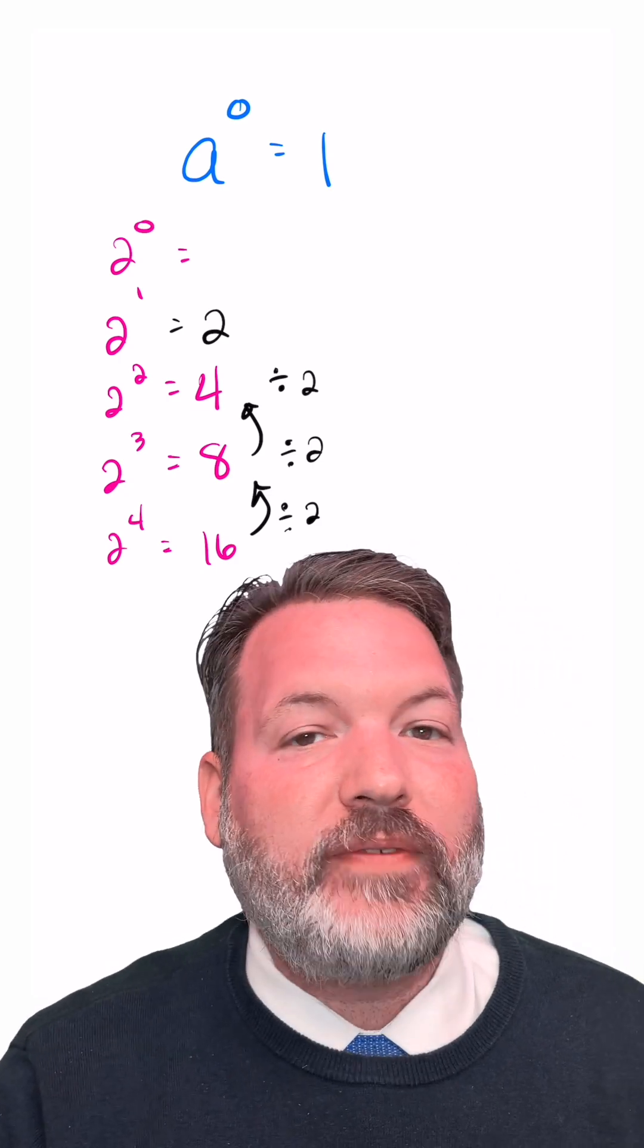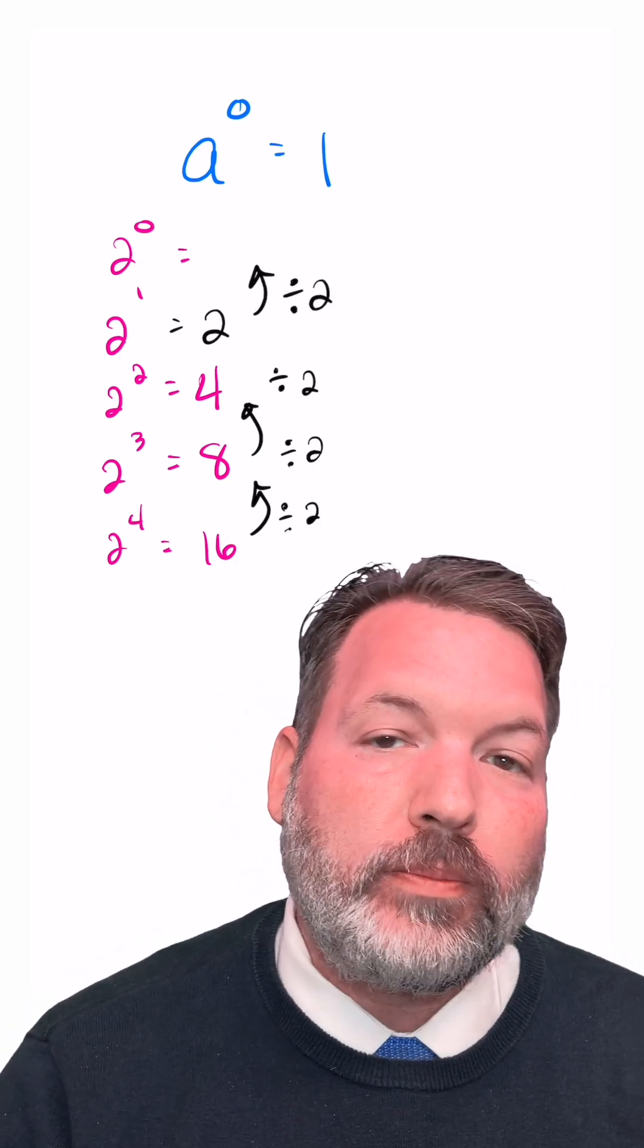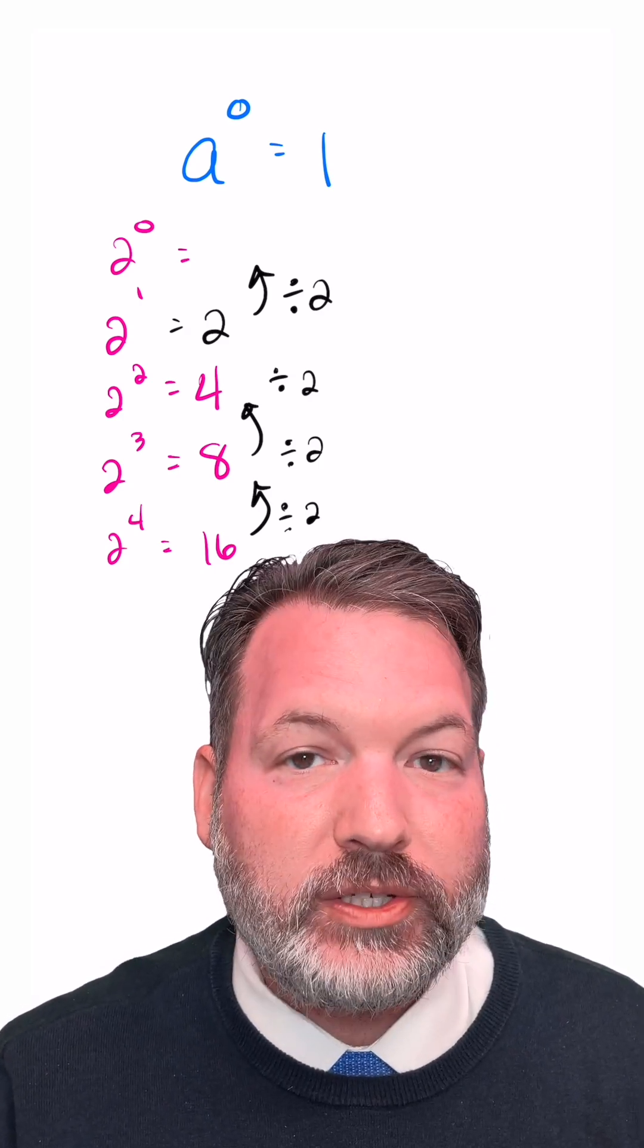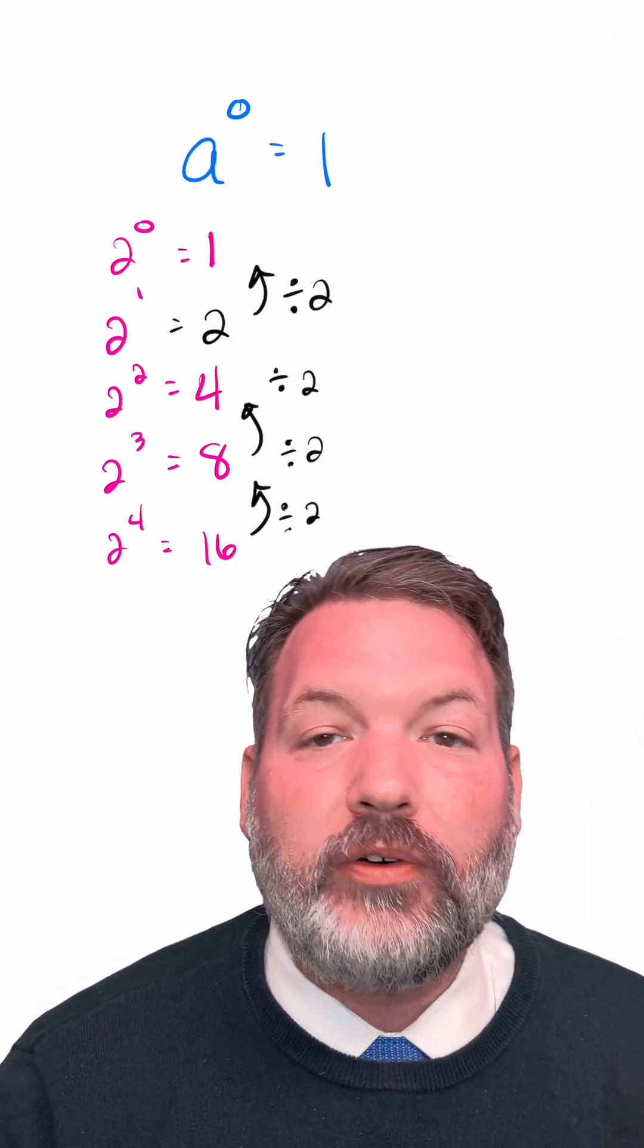But there's no special reason we have to stop at just the first power of 2. If we do this process one more time, we're going to divide that 2 to the first, which was 2, by 2 itself, which is going to give us back a result of 1.